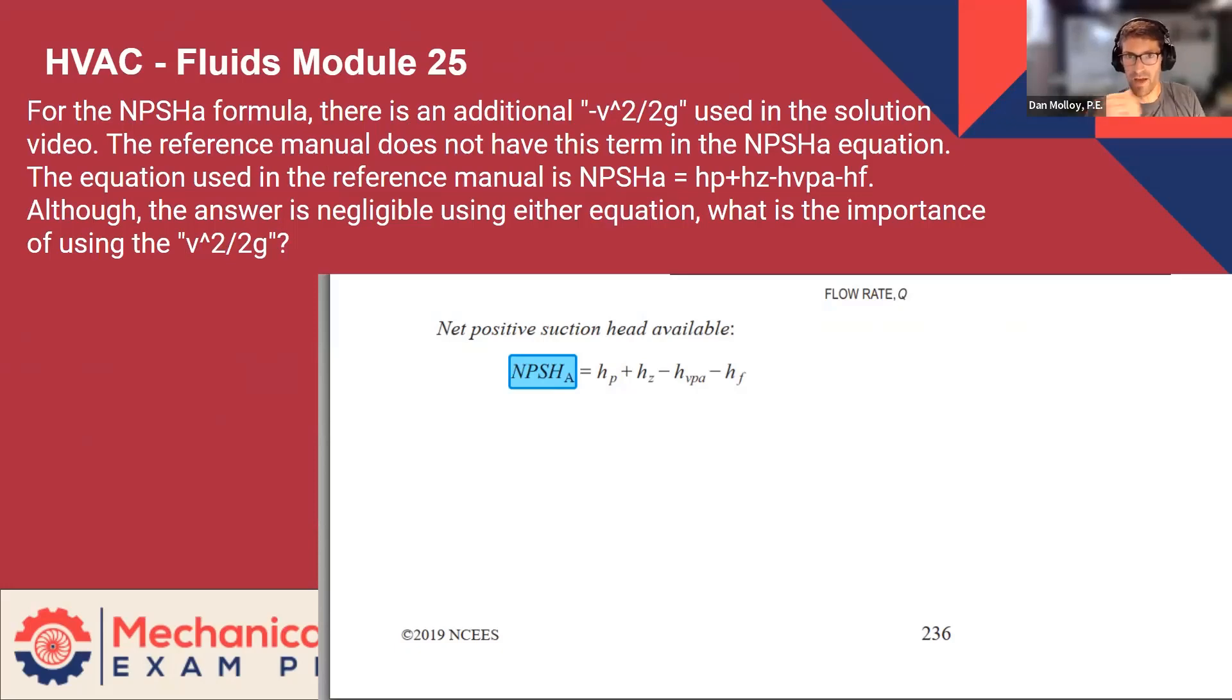All right, fluids 25. For the NPSHA formula, there's an additional V²/2g used in the solution video. The reference manual does not have this term in the NPSHA equation. The equation used in the reference manual is NPSHA = HP + HV - HVPA - HF. Although the answer is negligible using either equation, what is the importance of using the V²/2g?